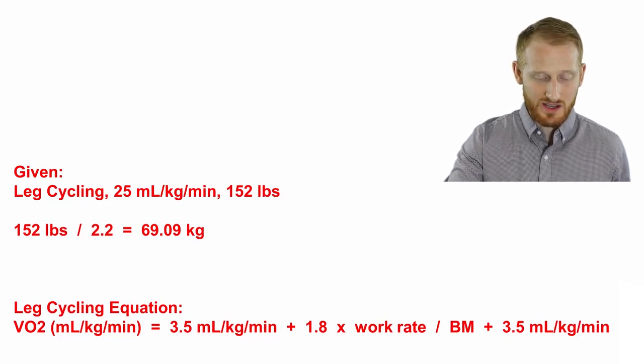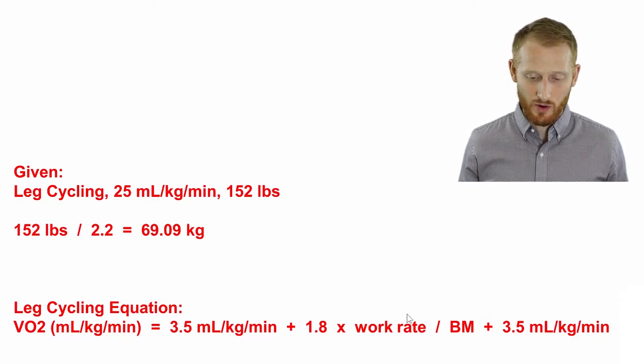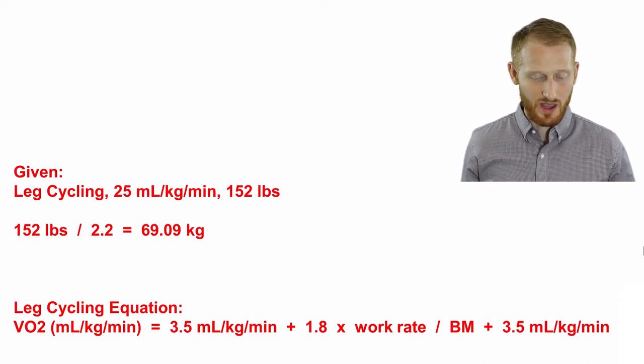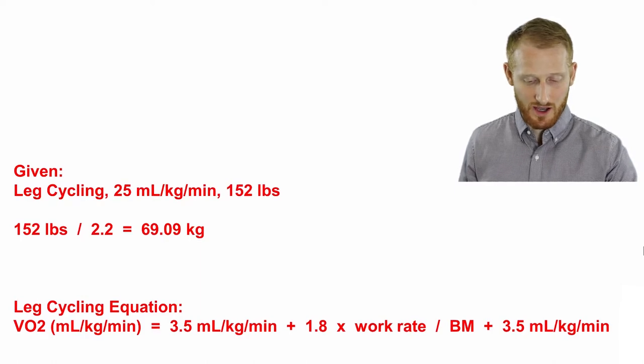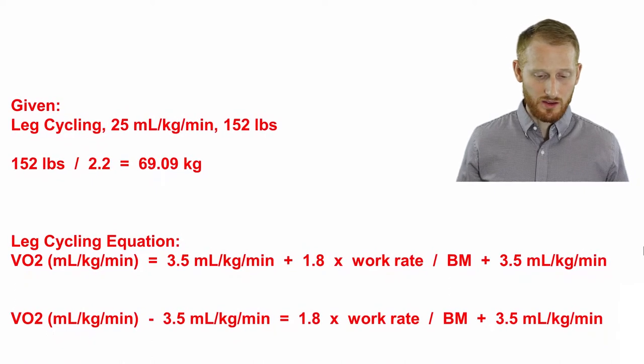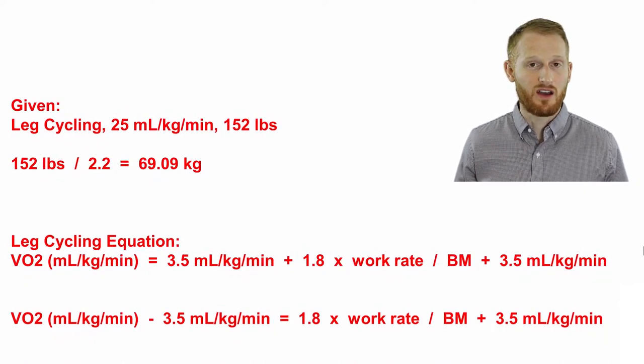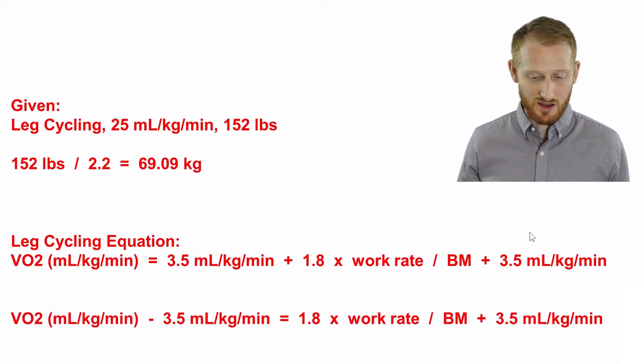We need to do some rearranging of this formula in order to isolate the work rate. Let's go ahead and work through that. First thing I'm going to do is move one of the 3.5 mls per kg per minute to the other side of the equation.